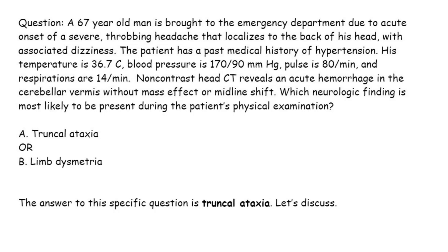The patient has a past medical history of hypertension. His temperature is 36.7°C, blood pressure is 170/90 mmHg, pulse is 80 per minute, and respirations are 14 per minute. Non-contrast head CT reveals an acute hemorrhage in the cerebellar vermis without mass effect or midline shift.